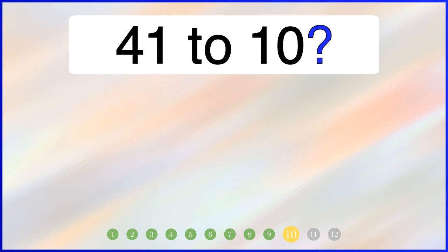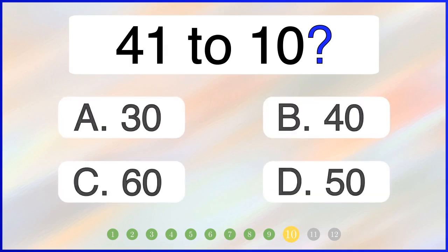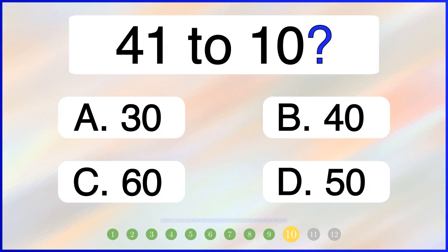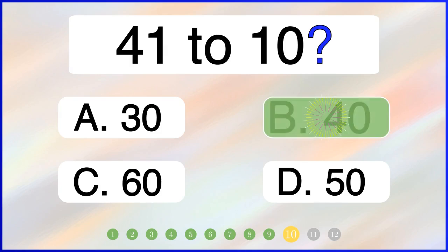What is 41 rounded to the nearest 10? The correct answer is option B: 40.